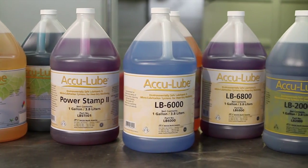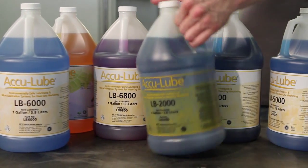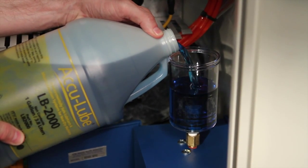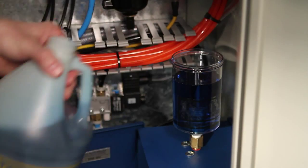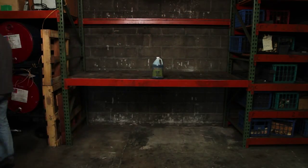AccuLube's cutting fluids are natural vegetable oil with high-tech additives to provide superior lubrication. On average, only two ounces of fluid per eight-hour shift is all you need. One gallon can last three months while recycling costs and cleanup are virtually eliminated.